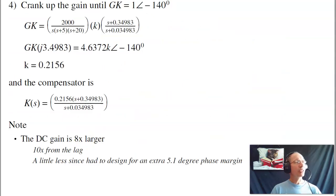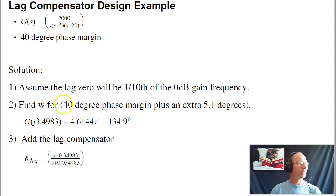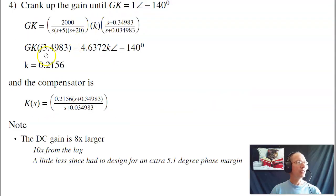So there's my lag compensator. Once I pick the lag compensator, now find the gain k. I've got g times k. I've got my lag compensator. Find the frequency where the phase shift is minus 140 degrees. And oddly enough, that was 3.498. It's still 3.498, because I designed for an extra 5.1 degree phase margin. That gives me the desired phase shift.